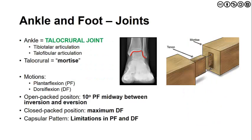The next joint is the talocrural joint, which includes the tibiotalar and talofibular articulations. The talocrural joint is commonly referred to as a mortise — a concept from woodworking where a tenon fits snugly within a hollowed-out mortise. Here, the talar dome is the tenon, and the mortise is made up by the distal tib-fib joint. The primary motions at the talocrural joint are plantar flexion and dorsiflexion.